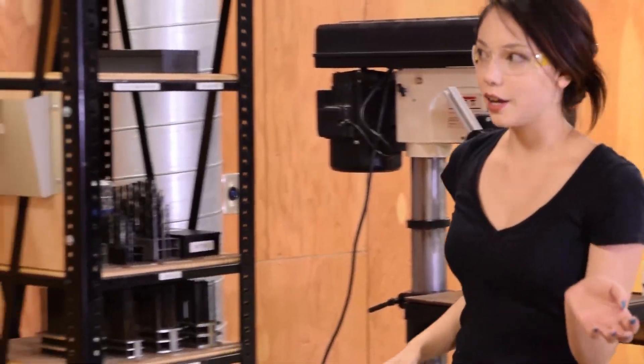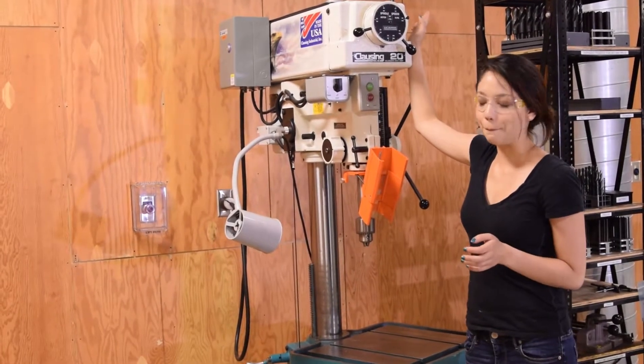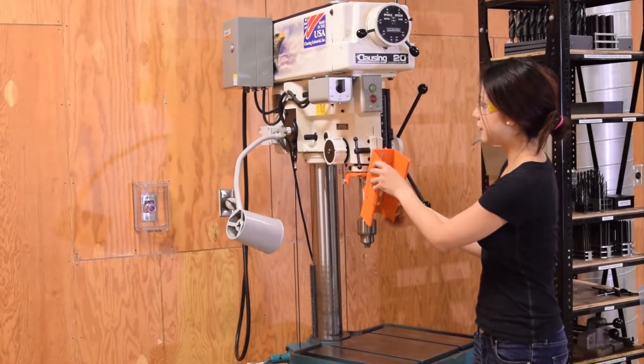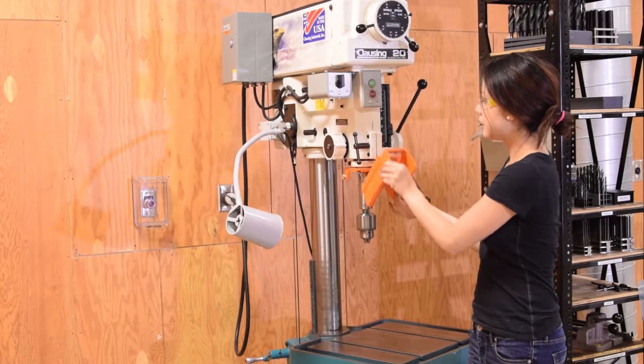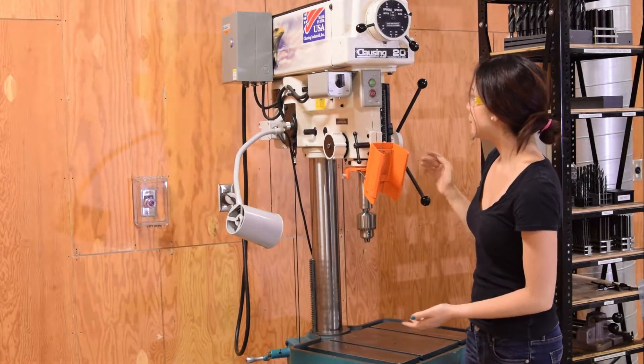You might have a fancier machine in your shop that's digital. So this is a Klausing and there's a couple things that make it unique. The guard is different. You're welcome to use it.